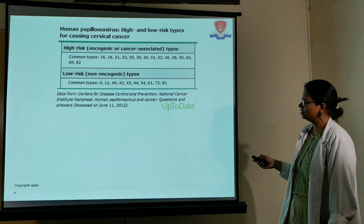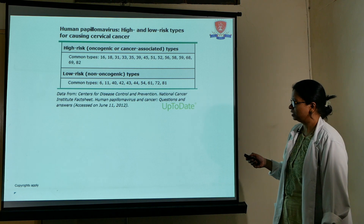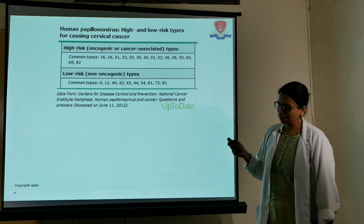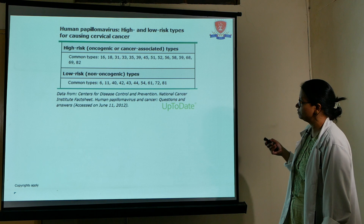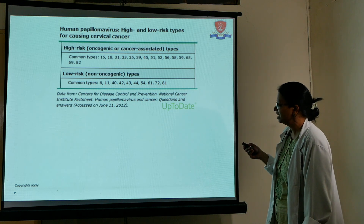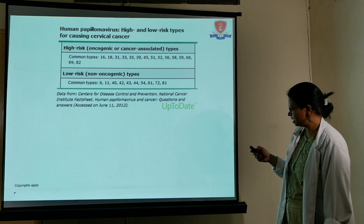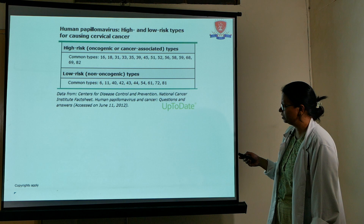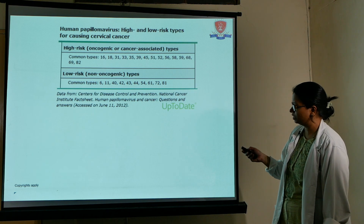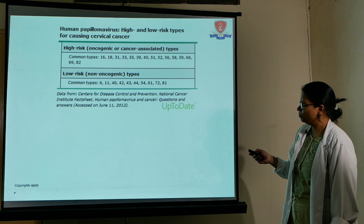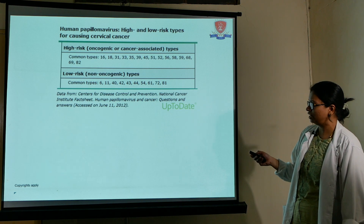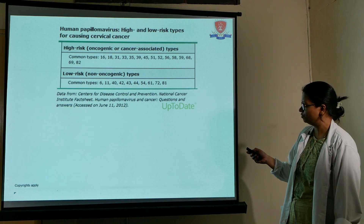High-risk HPV types commonly include 16, 18, 31, 35, 45, 52, 56, 58, and others. Low-risk types include 6, 11, 40, 42, and 43. Types 6 and 11 cause genital warts, while high-risk oncogenic viruses cause squamous or adenocarcinoma of the cervix.